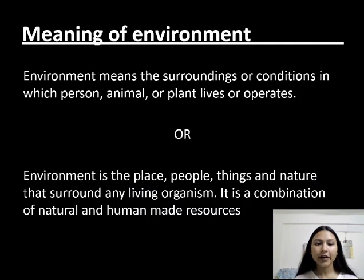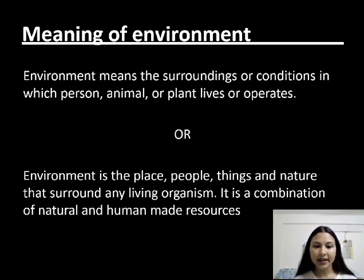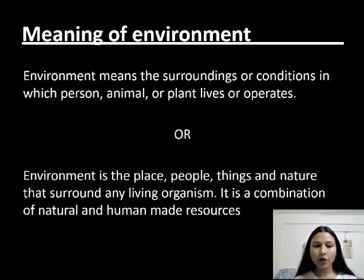Meaning of environment. Environment means the surrounding or conditions in which a person, animal, or plant lives or operates. Or we can say that environment is a place, people, thing, and nature that surrounds any living organism. It is a combination of natural and human-made resources.